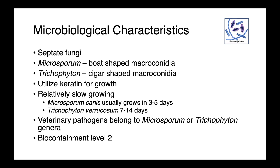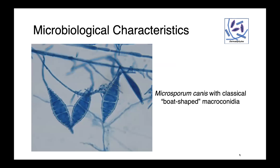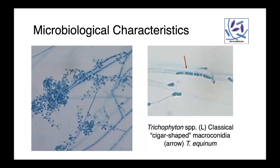All of our dermatophytes are biocontainment level two. In this image here, you can see Microsporum canis with the very classical boat-shaped macroconidia. And on the right, we can see the classical cigar-shaped macroconidia associated with Trichophyton. On the left, we can see the Trichophyton hyphae with these septa — the divisions within the fungal structures.